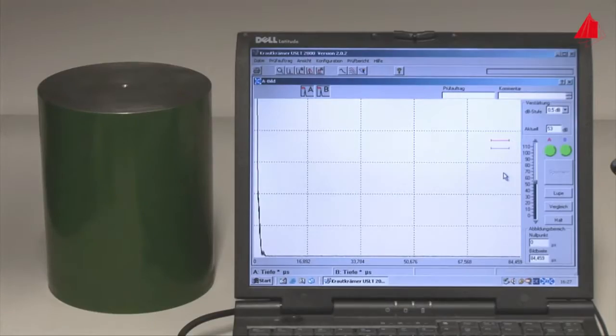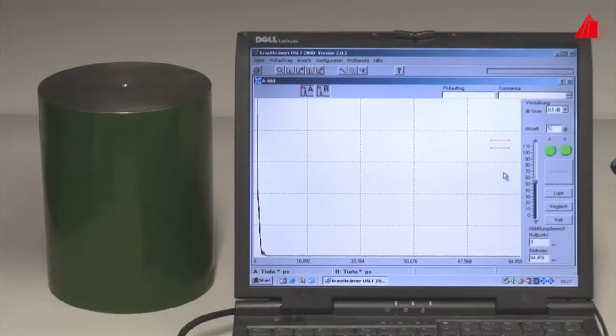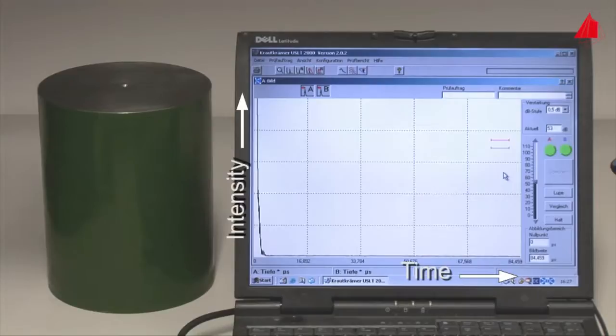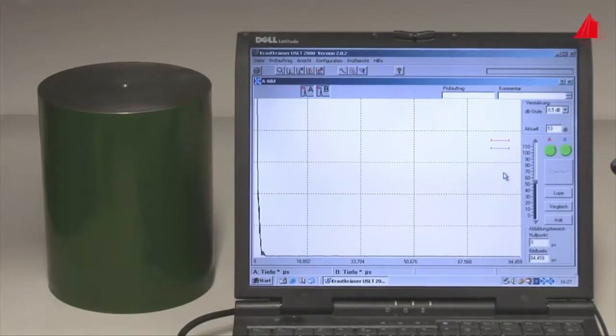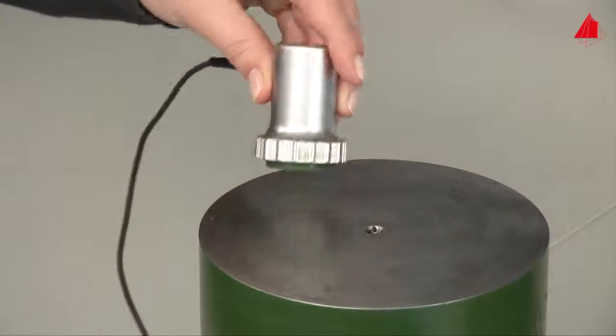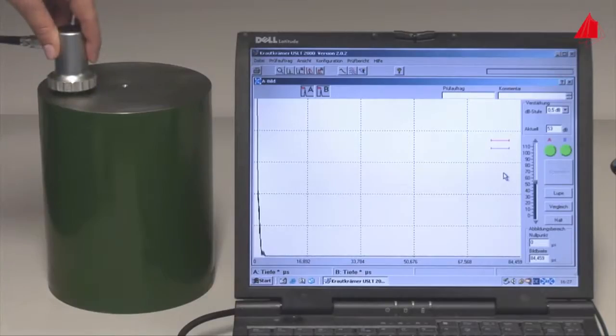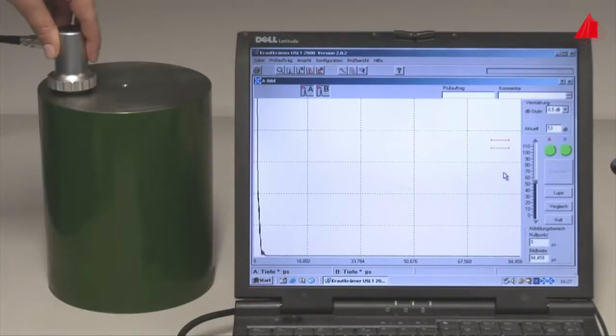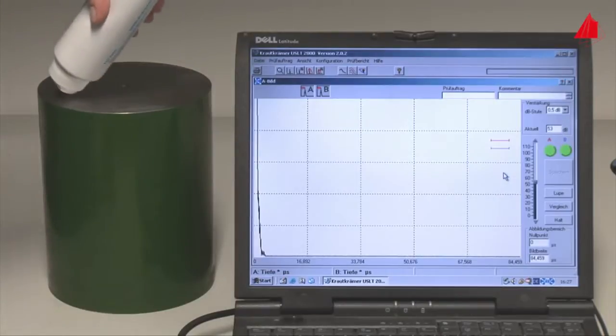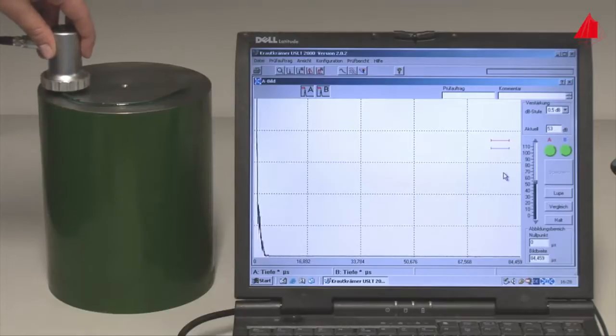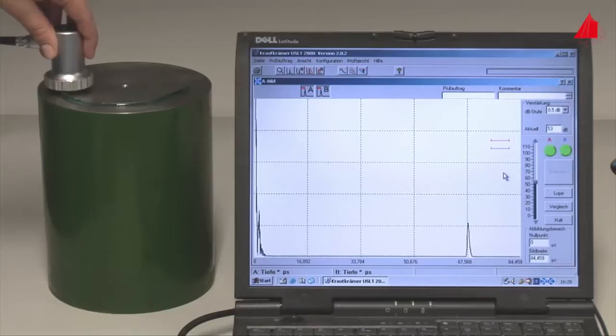A computer operates the probe via a plug-in card and power electronics. On the monitor, the intensity is plotted upwards and the time is plotted to the right. After placing the probe on top of the cylinder, initially no echo at all may be seen on the monitor. The reason for this is the too small contact area between the probe and the workpiece. Only with the use of a gel, the so-called couplant, the ultrasonic pulses can get into the workpiece and can also go back into the probe. Now the back wall echo turns up on the monitor.